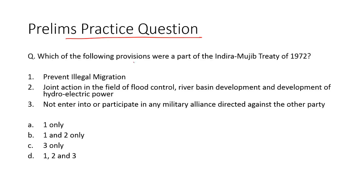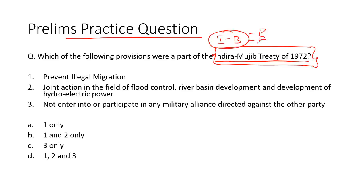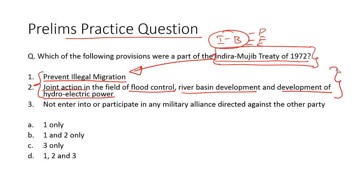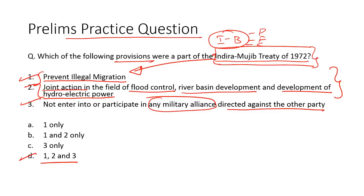Now let us take up the practice questions. Which of the following provisions were a part of the Indira-Mujib Treaty of 1972? This was a treaty signed between then Prime Minister of India Indira Gandhi and then Prime Minister of Bangladesh Sheikh Mujibur Rahman, also referred to as the India-Bangladesh Treaty of Peace, Friendship and Cooperation. The treaty contains provisions for preventing illegal migration from Bangladesh into India, provisions for joint cooperation in flood control, river basin development and hydroelectric projects, and provisions that prevent both countries from joining any military alliance directed against the other party. So all three statements are correct — Option D is the right answer.